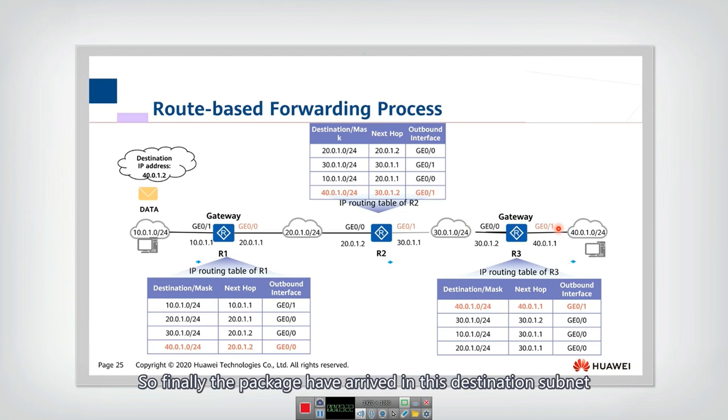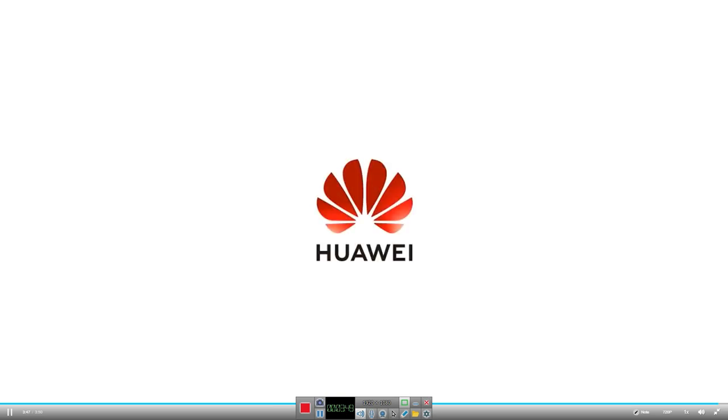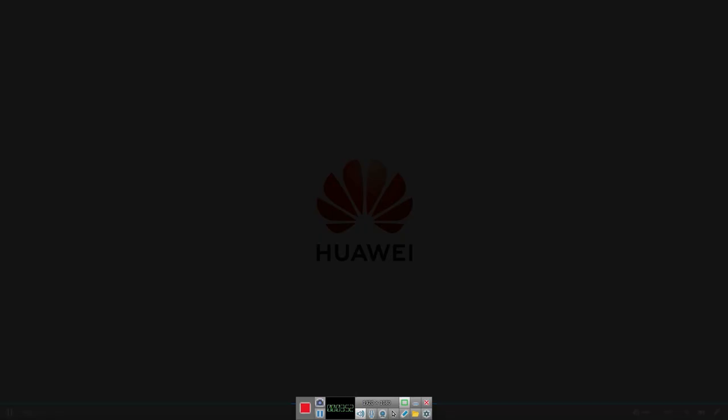Finally, the packet has arrived in this destination subnet. That's all for the forwarding process. In this process, you can see that every gateway or router should maintain a routing table, and they will forward the packet according to the destination. This is destination-based forwarding.